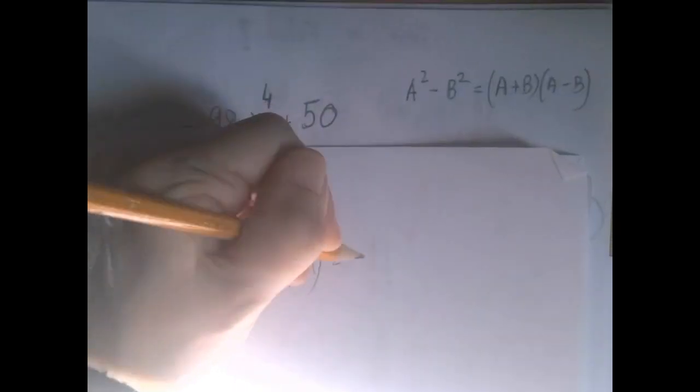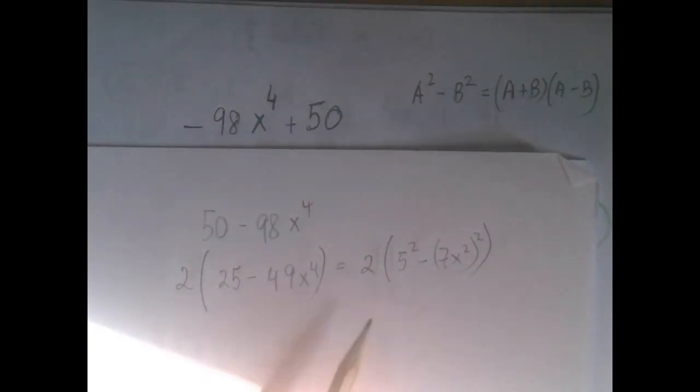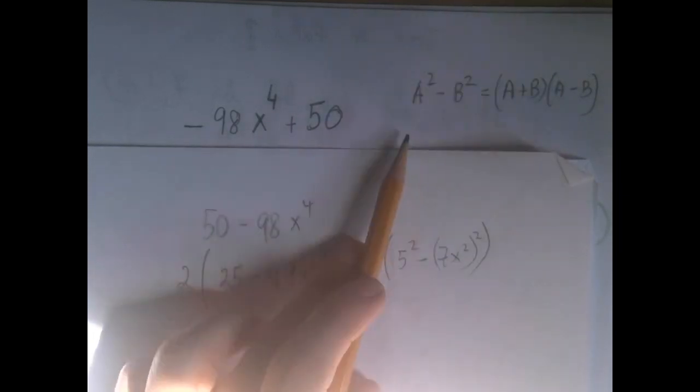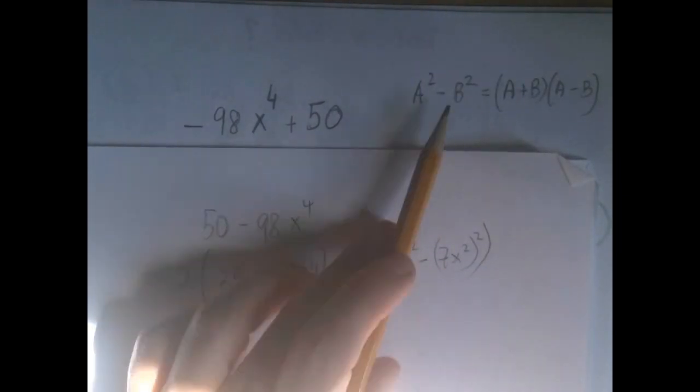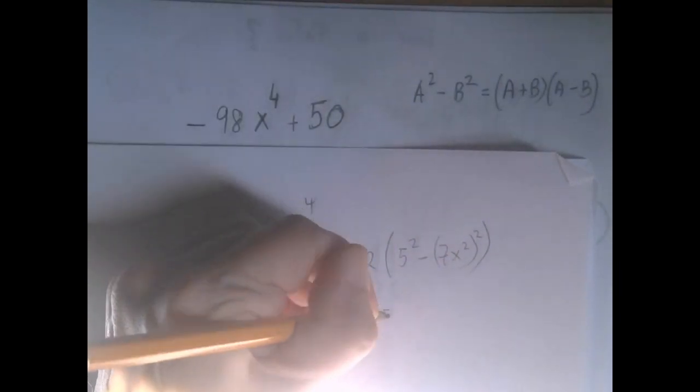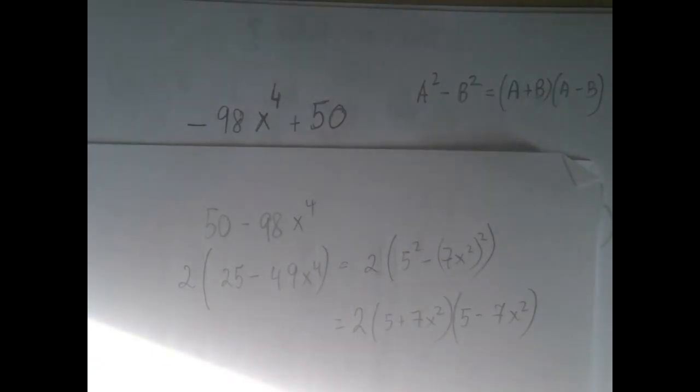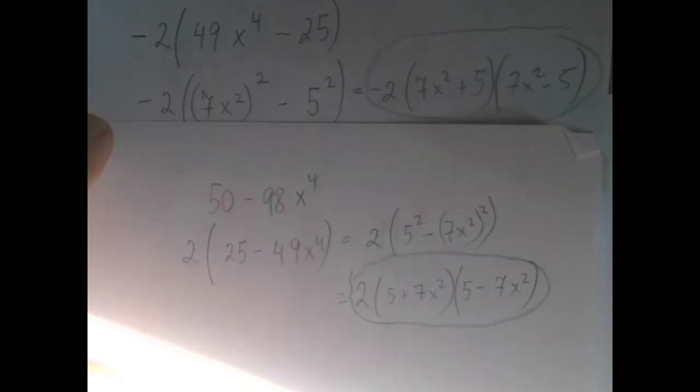So then we get 2 times 5 squared minus 7x squared squared. Then if you play out this drama, a will be played by 5 and b will be played by 7x squared. So we get a plus b, which is 5 plus 7x squared, and 5 minus 7x squared is a minus b.